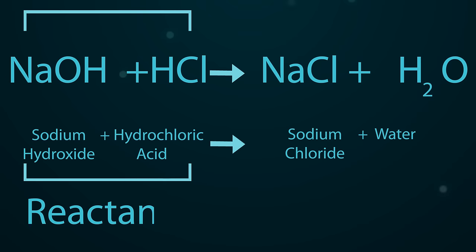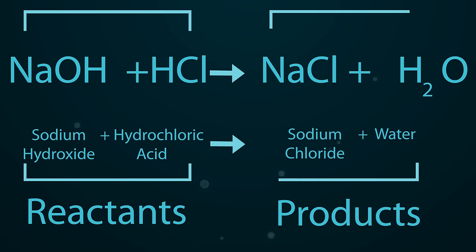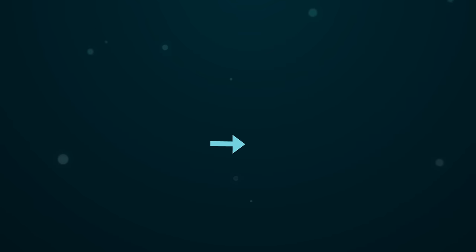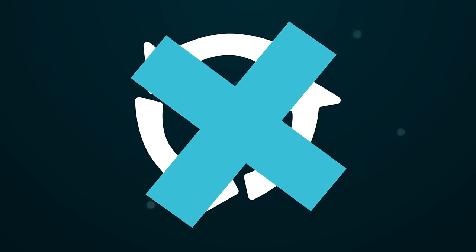When they are written, both types show the reactants on the left of an arrow and the products on the right. The arrow is there to show that the reaction is irreversible.